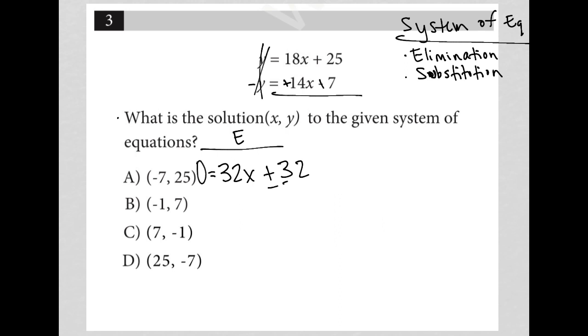Now I can subtract 32 from both sides. I'd have negative 32 equals 32x. I divide both sides by 32, and I have negative 1 equals x.